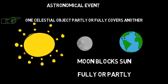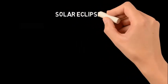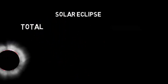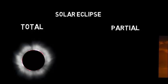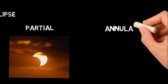It may be fully or partly. That is called a Solar Eclipse. So it can be total, where the Moon is blocking the Sun fully, partial, where the Moon is blocking the Sun partially, or annular.